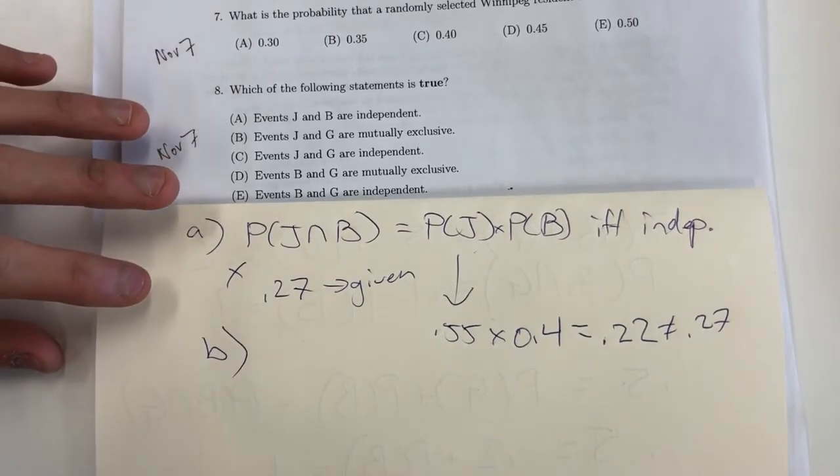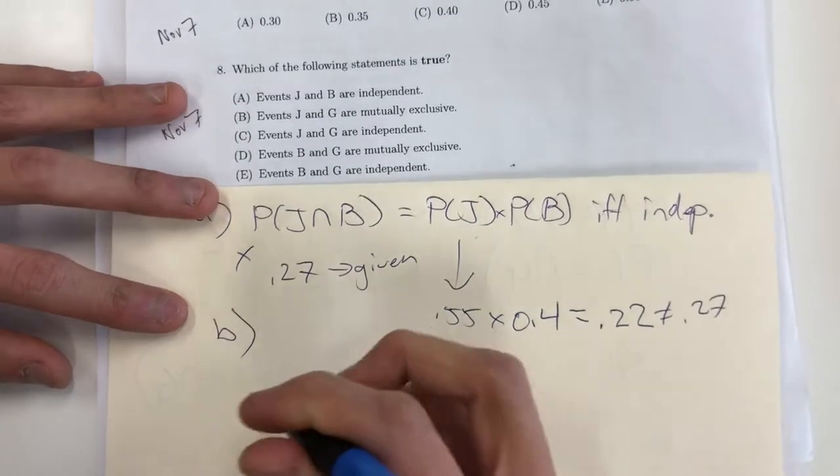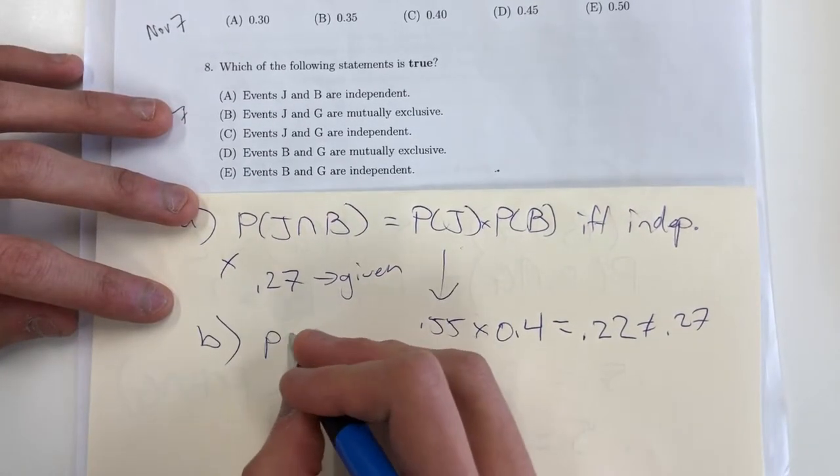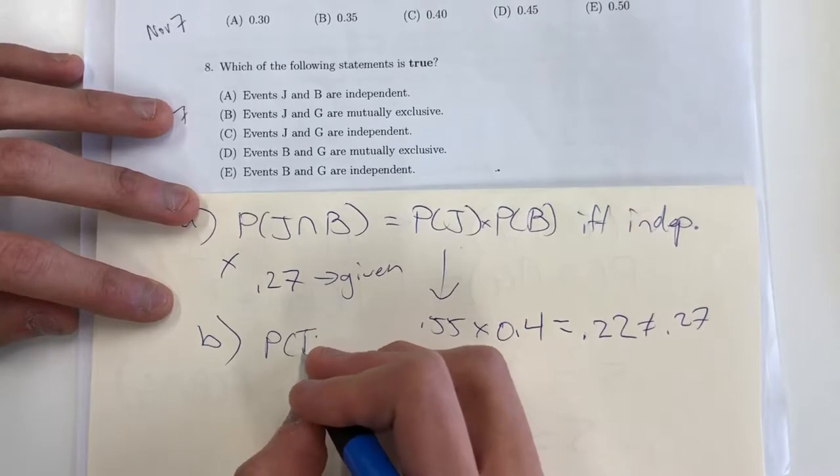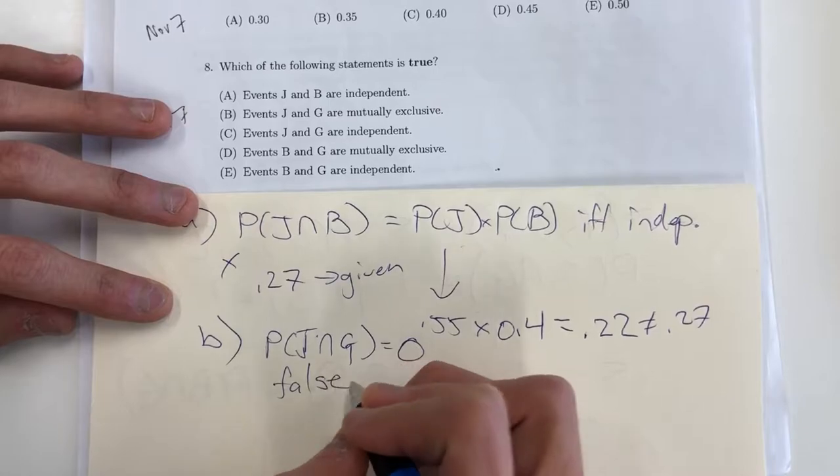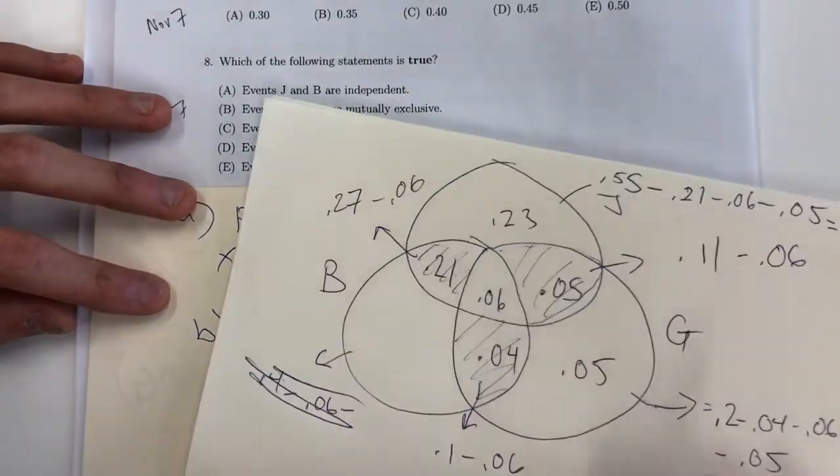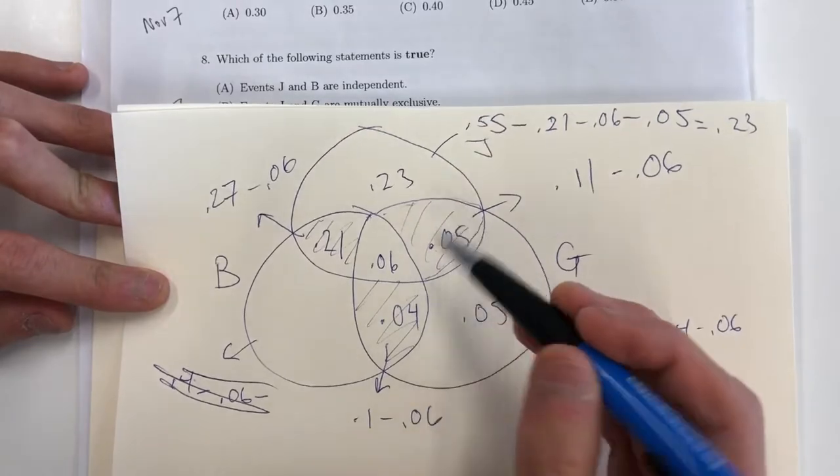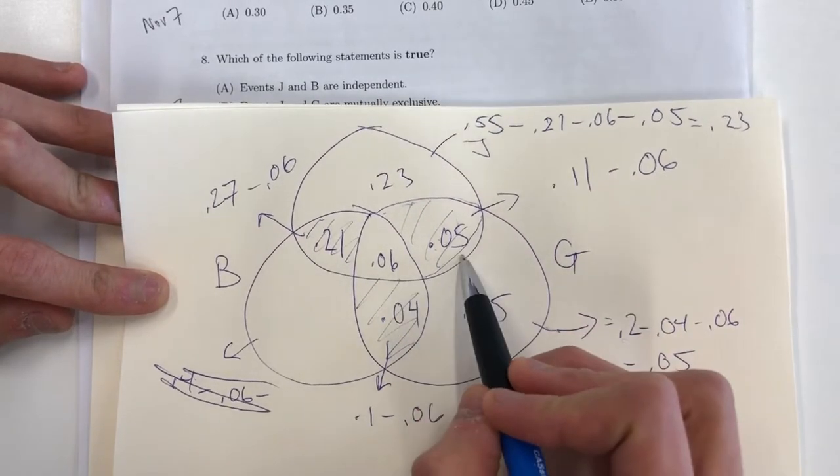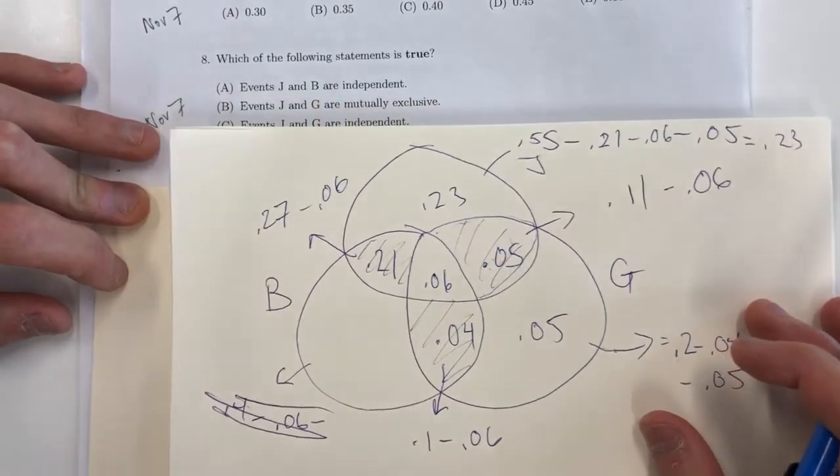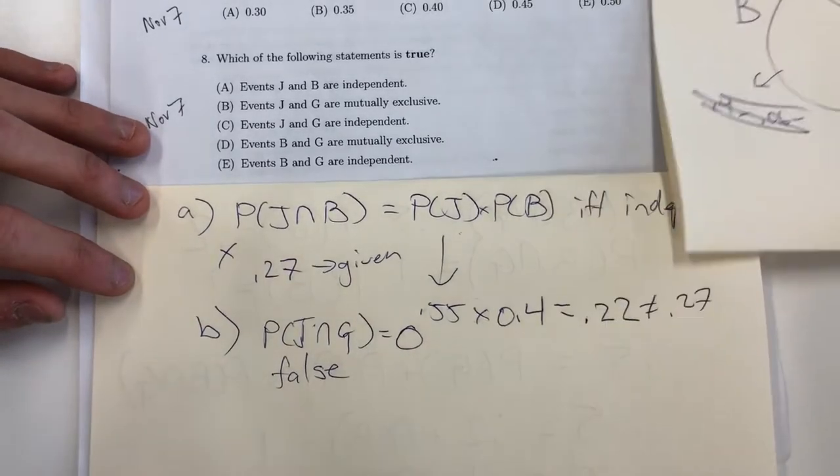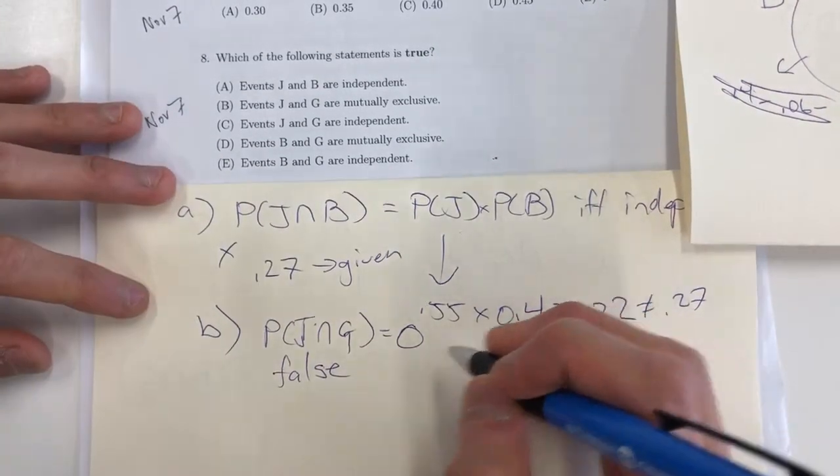Let's look at letter B. Events J and G are mutually exclusive. This is only the case if their intersection equals 0, but this is false because from the Venn diagram that we calculated, between J and G, we see that it's 11%. That's the probability that they're both a Jets and a Gold Eye fan. Since it's not equal to 0, we know they are not mutually exclusive.